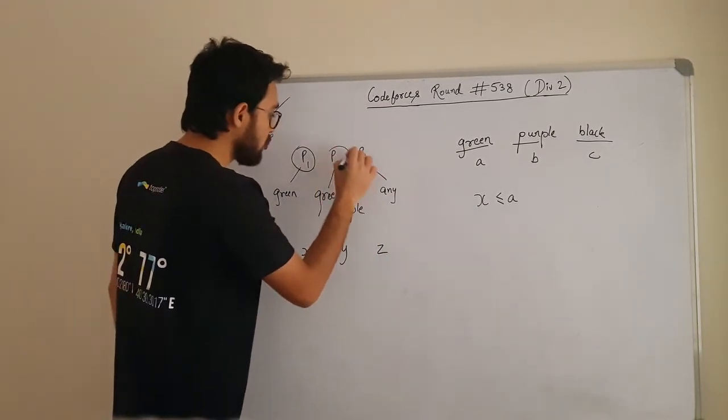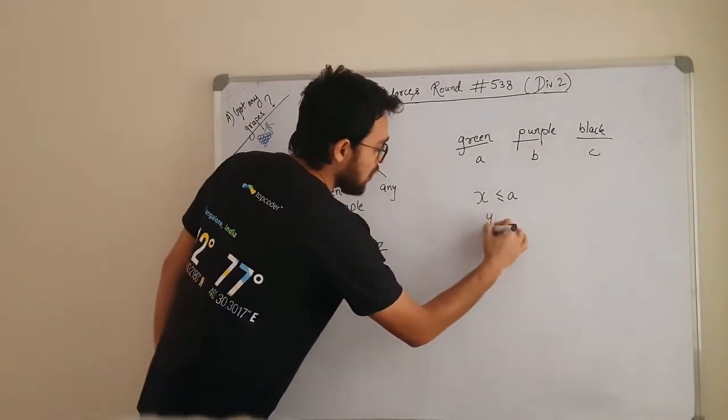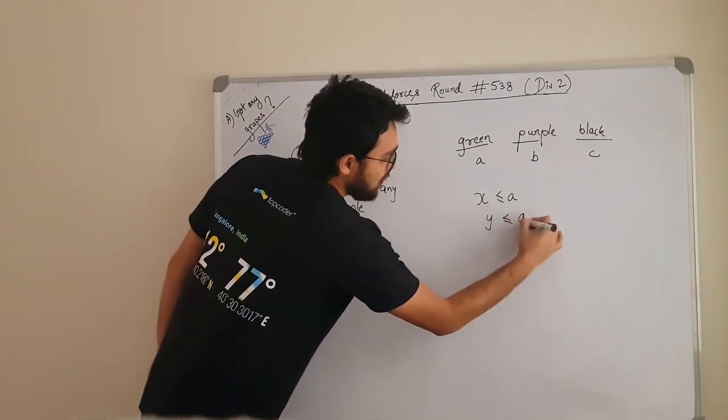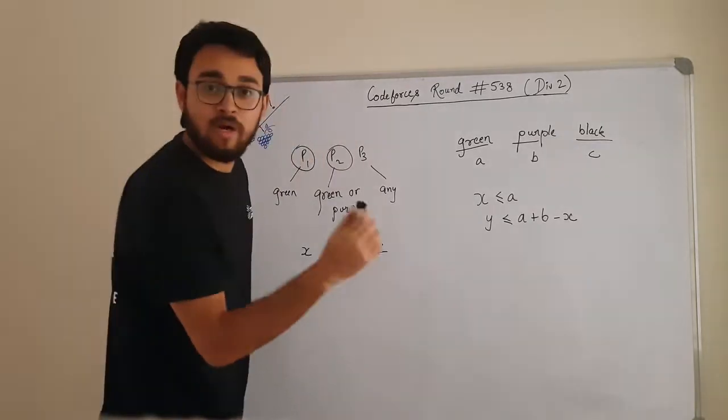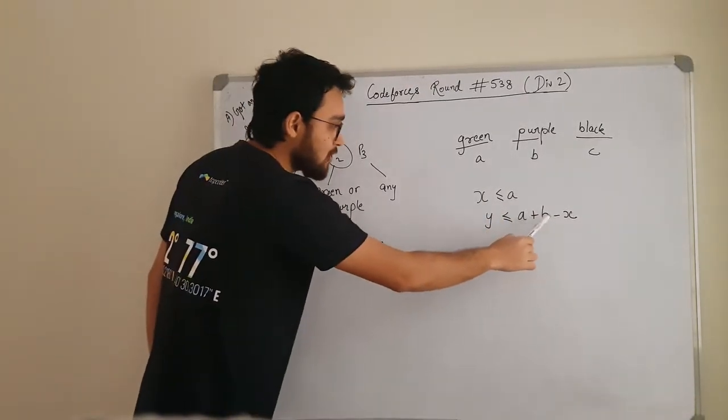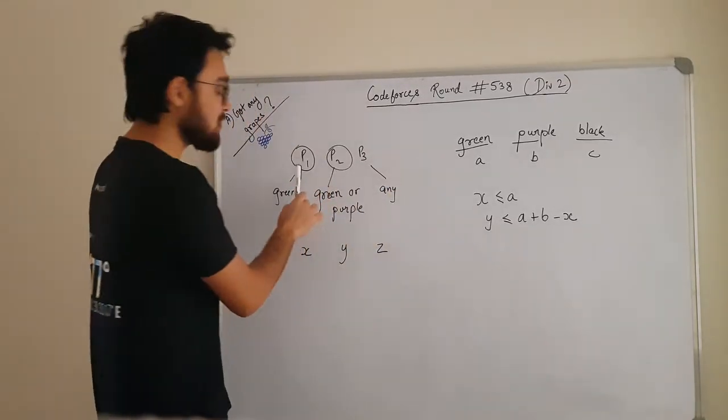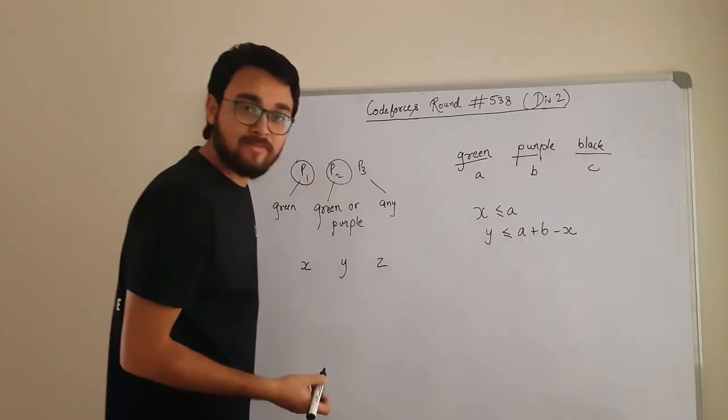Now person P2. Person P2 likes green or purple grapes. So Y needs to be less than or equal to A plus B minus X. Why are we doing this minus X? Because out of this A plus B grapes, we have already given X grapes to person P1. That is why we are subtracting X from here.